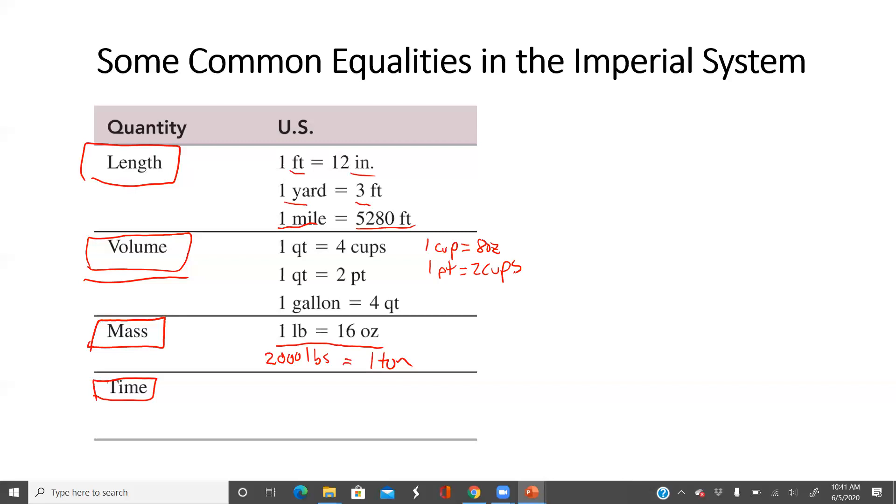Two pints make a quart. A lot of people know you used to buy a quart of milk, which was really popular back in the days when I was a kid. But if you drank a lot of milk like we did, four quarts make one gallon.